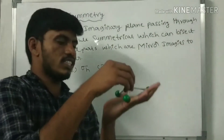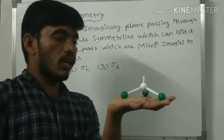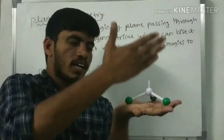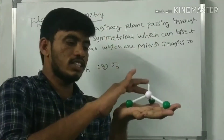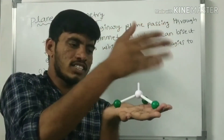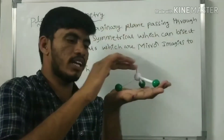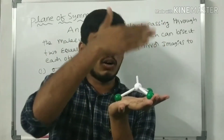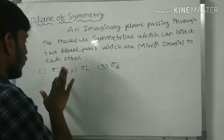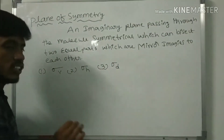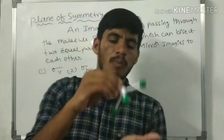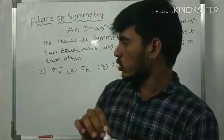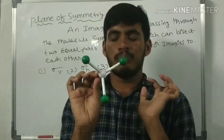Another example is ammonia. The plane passes through the nitrogen and one hydrogen, making the other two hydrogens mirror images of each other. Another plane passes through a second hydrogen similarly. The principal axis is parallel to all three planes. Ammonia has three sigma v planes. There is no sigma h because ammonia is not a planar molecule.